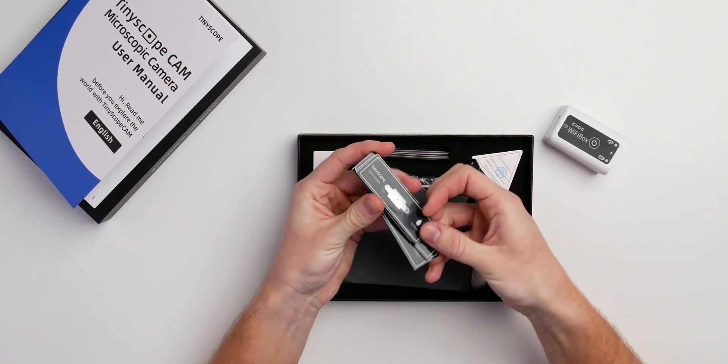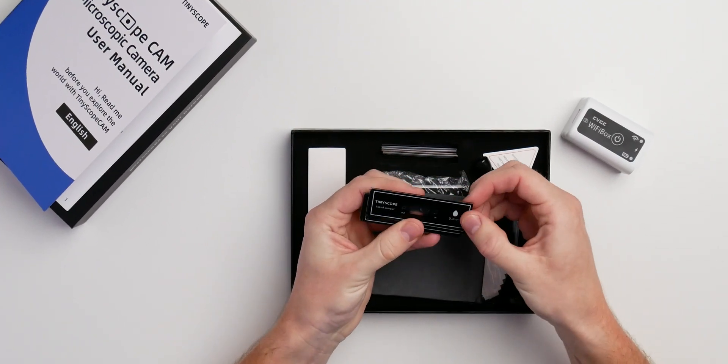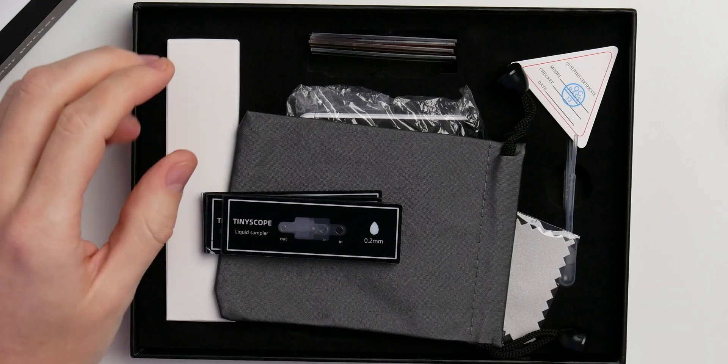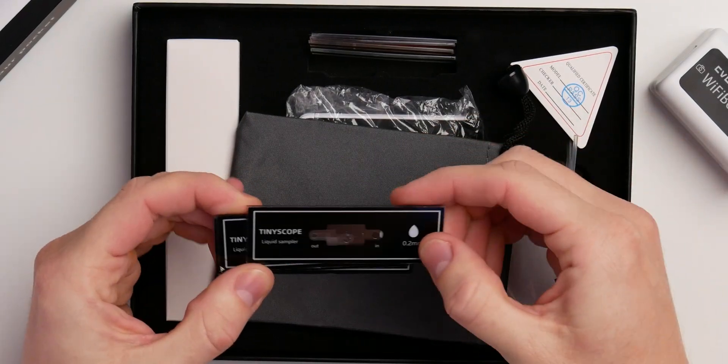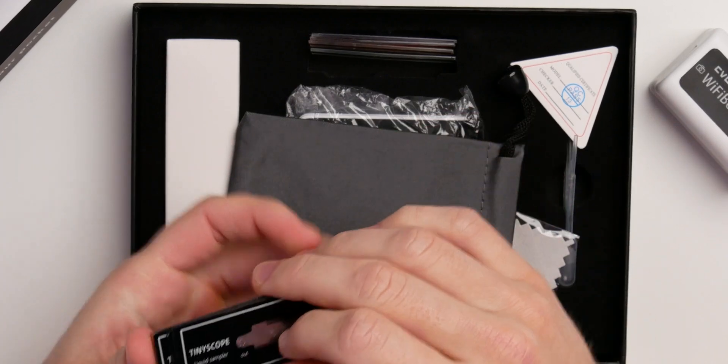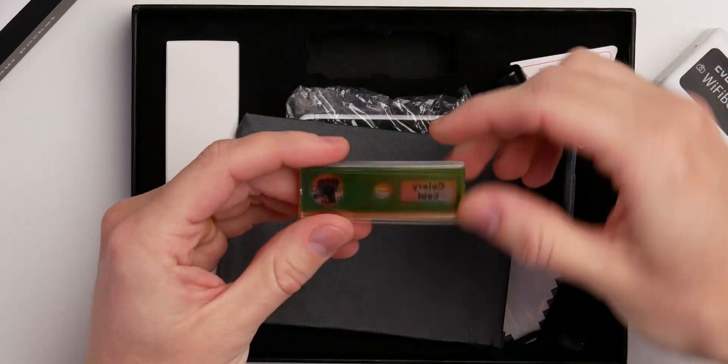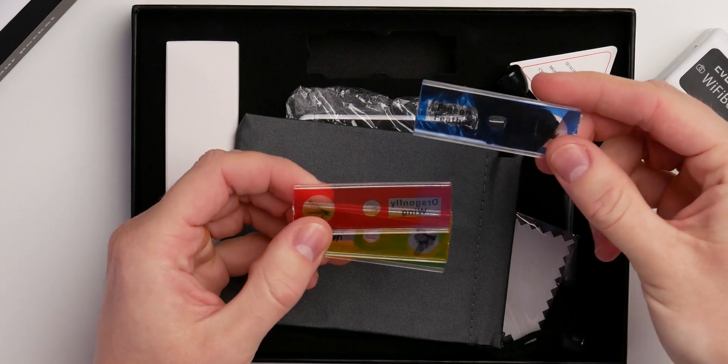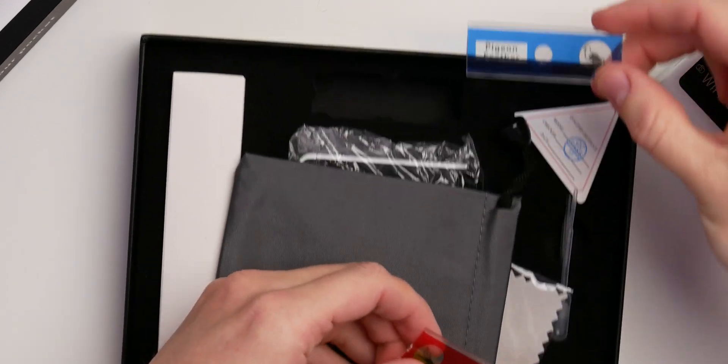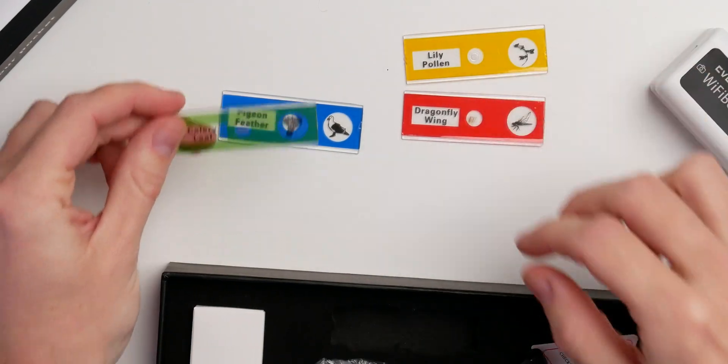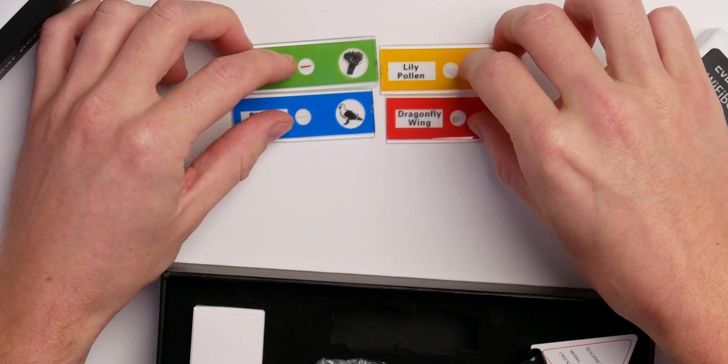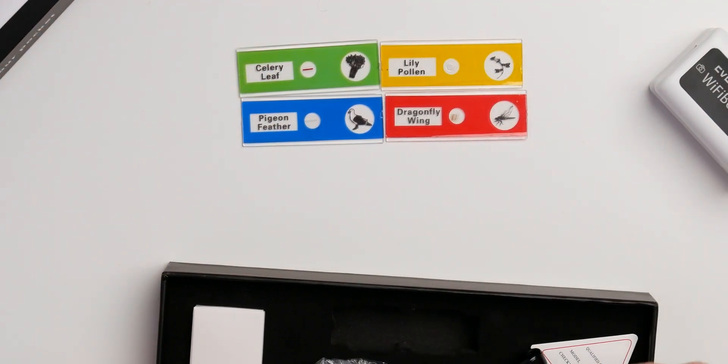So what do we got? We got the samplers here you can just use to insert your liquids. We just get all the liquid samplers here, super easy, super simple inside and outside. We get some probes which is also cool. So pigeon feather, dragonfly wing, lily pollen and serially leaf. So these are just some things you can just look at directly.